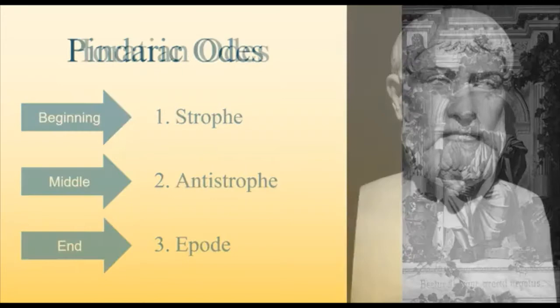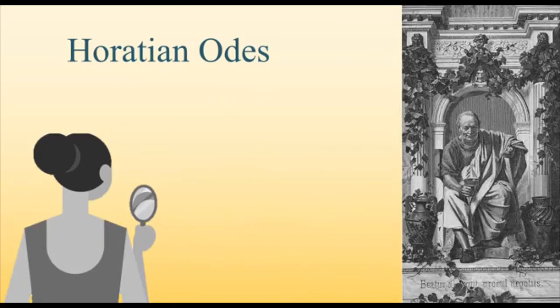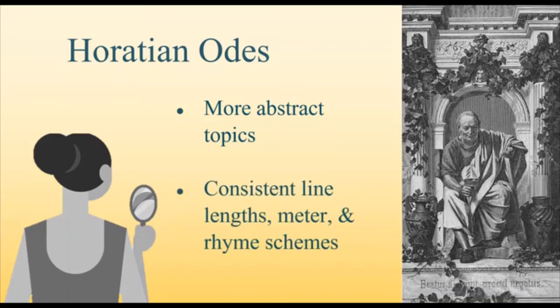Horatian odes are named for the Roman poet Horace. Unlike Pindaric odes, which were heavily produced performance pieces, these odes were meant to be enjoyed as personal and reflective experiences, and they tend to be about nature or abstract topics, like grief, rather than the more glamorous topics of Pindaric odes. Horace often addressed his odes to a friend, and odes that take after his model are usually an intimate interaction between speaker and reader. These odes are composed of either two- or four-line stanzas, with a consistent rhyme scheme and meter. While Pindaric odes are more clearly divided into sections with distinct line lengths and rhyme schemes, Horatian odes are mechanically consistent from beginning to end.